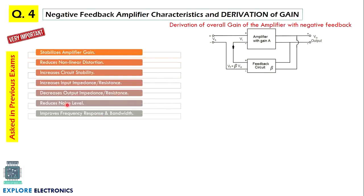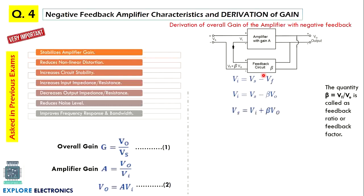Here we have two questions: one is negative feedback amplifier characteristics, and then derivation of overall gain of the amplifier when we connect it in negative feedback. So this derivation is also very important to get the final expression for gain. We have these many steps and overall gain will be reduced once we connect the negative feedback, which is an important thing.